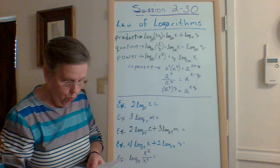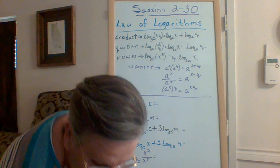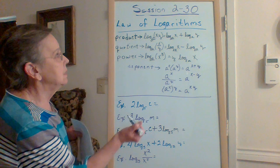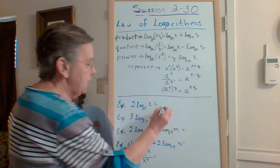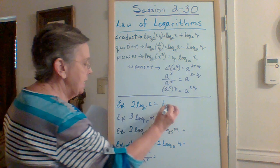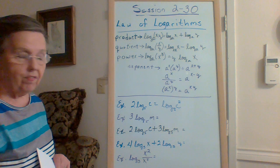So here we go with two times the log of c with base five. How can we rewrite that? When I have a number out in front — two times — that means I'm doing a power. So this is going to be equal to the log of c to the second power with the base of five.